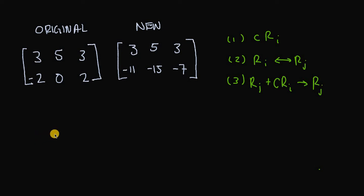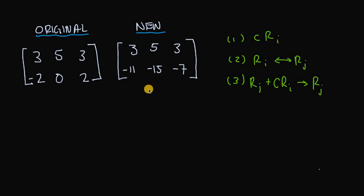In this video, we're going to investigate two different matrices — this original matrix on the left and this new matrix on the right. We're going to try to identify which elementary row operation or operations are being performed to obtain this new matrix from this old matrix.